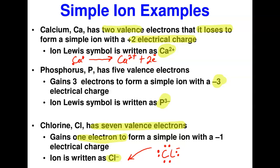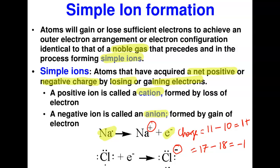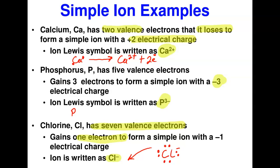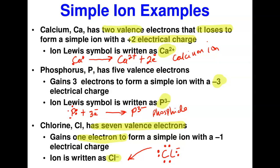For phosphorus, which is in group 5A, we put five dots around its symbol. It gains three electrons, shown to the left of the arrow, and forms the phosphide ion (P³⁻). For nonmetals, we rename the ion by dropping the ending of the element name and replacing it with '-ide.' So we call it the phosphide ion. For metals like calcium, we simply say 'calcium ion.'